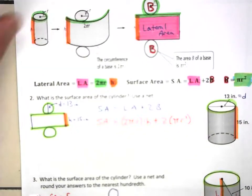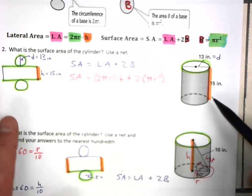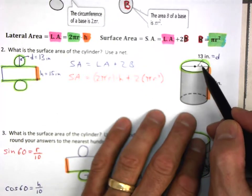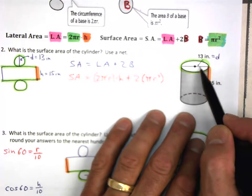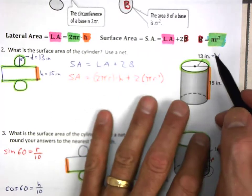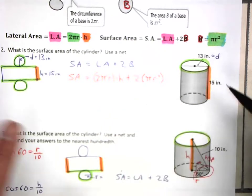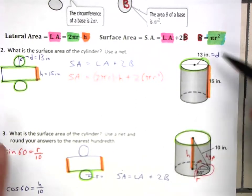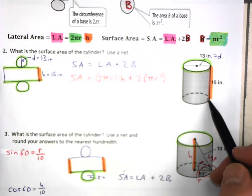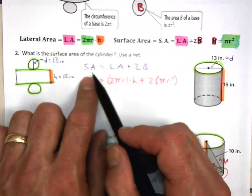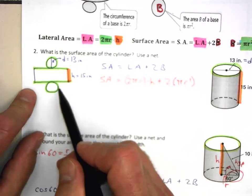Let's do an actual example. This is a cylinder with 13 inches referring to the diameter and 15 inches as the height of the cylindrical solid. We always start with surface area equals lateral area plus two times the base. We probably should start with a diagram.